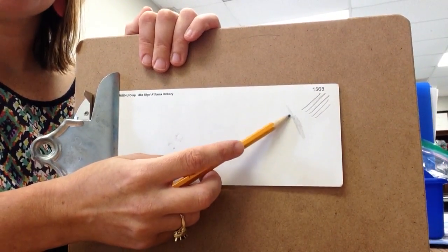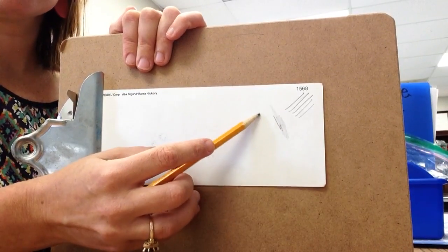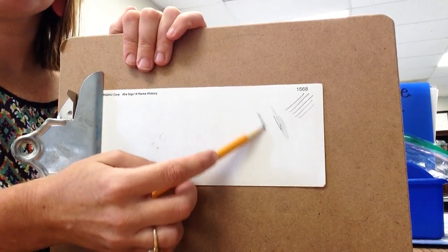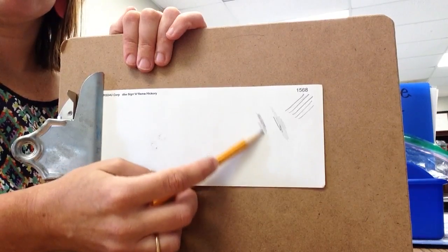So if I wanted that to be a little bit darker, instead of just adding more pressure with my pencil, I'm just going to do more layers. See, I'm going the same pressure. I'm going to add more layers.